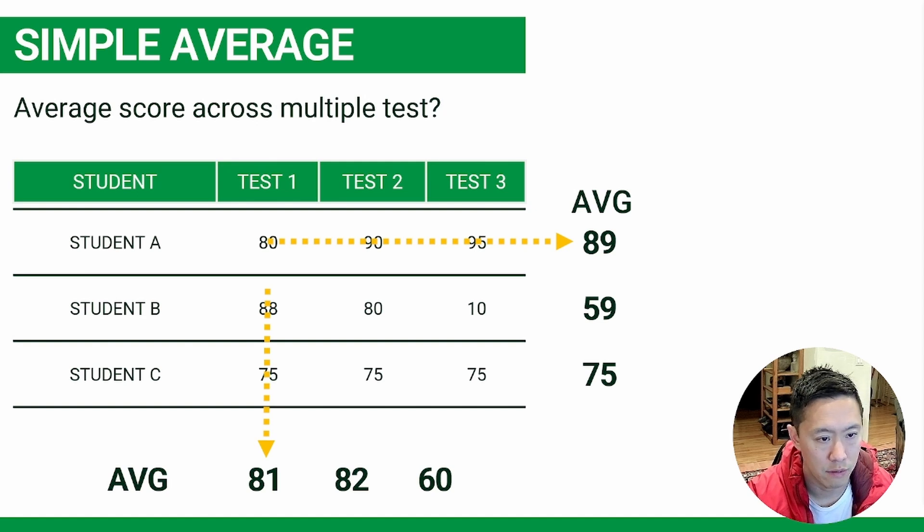Another example, let's just say you have the same three students, three tests. It really depends on what you want to do here. If you want to find out the average score for student A, for instance, you just add all his tests together, divide by three, get an average of 89.